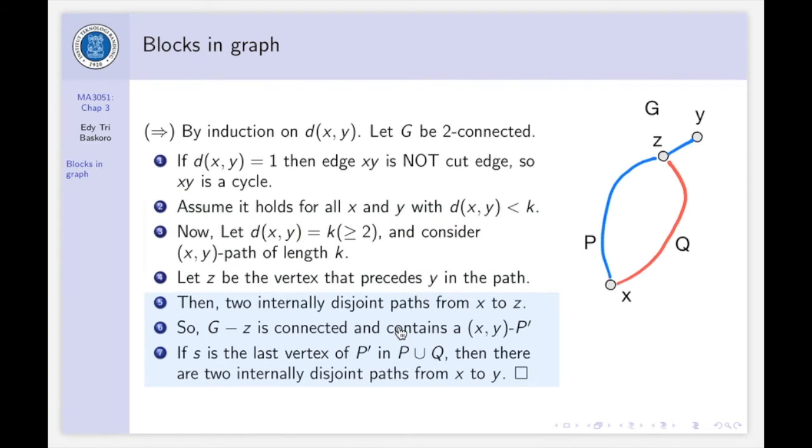And let Z be the vertex in this path before Y. Then, according to induction hypothesis, we have two internally disjoint paths from X to Z because the distance between X to Z is less than K. So, if you remove now Z from G, then the graph remains connected, right, because G is too connected. So, assume that that graph, after removing Z from G, contains a path from X to Y. And we call this path P prime. So, suppose we have this path after removing Z from G.